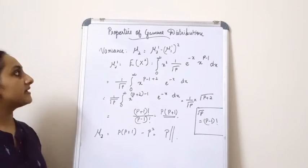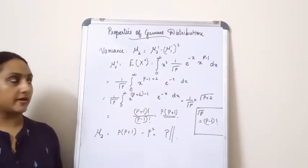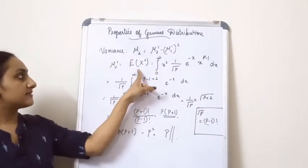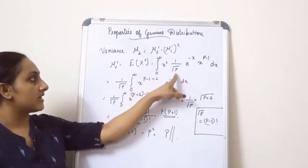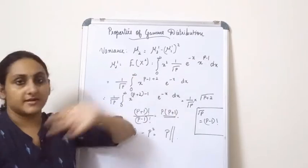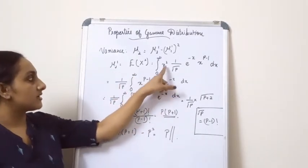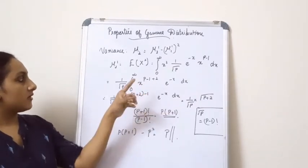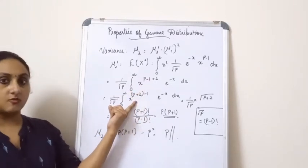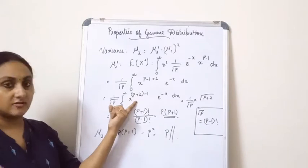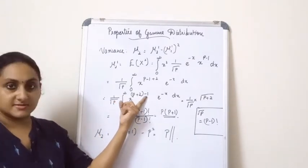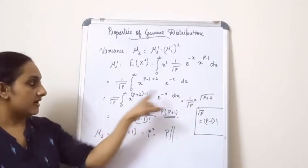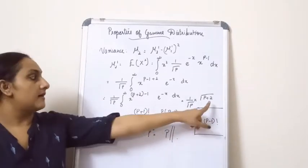Now let's look at the variance. The variance is given as mu2 = mu2' − (mu1')². We already found mu1', so we need to find mu2'. Now mu2' = E[x²] = integral from 0 to infinity of x² × (1/Γ(p)) e^(−x) x^(p−1) dx. Combining x² and x^(p−1), I get x^(p−1+2), and after rearranging, x^(p+2−1) e^(−x) dx = (1/Γ(p)) × Γ(p+2).